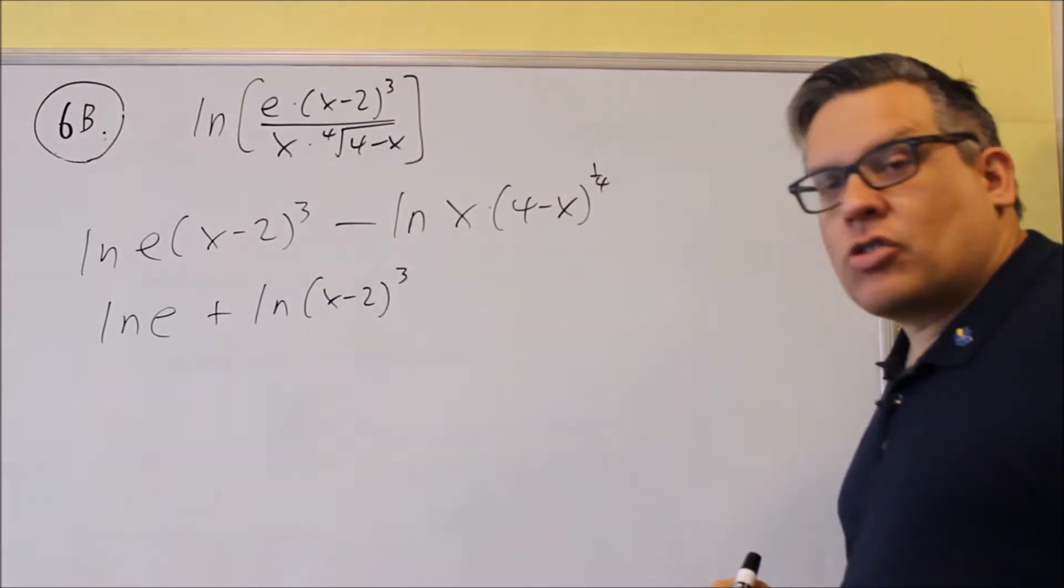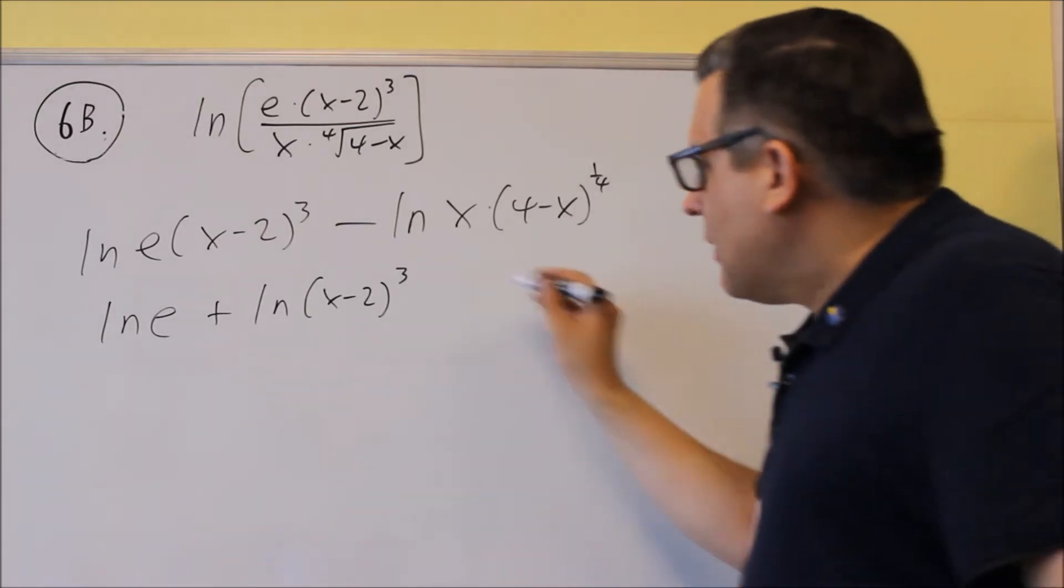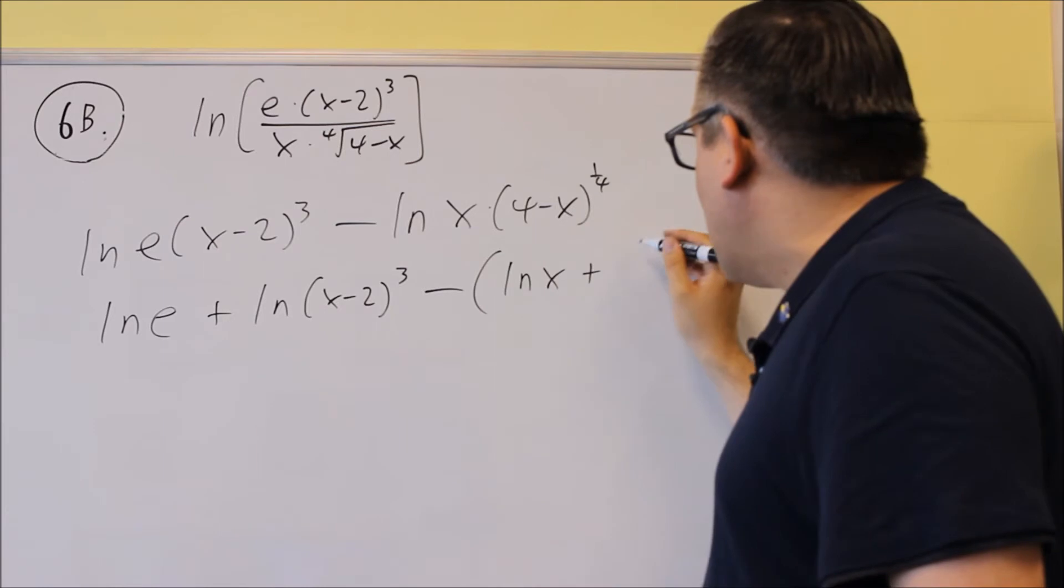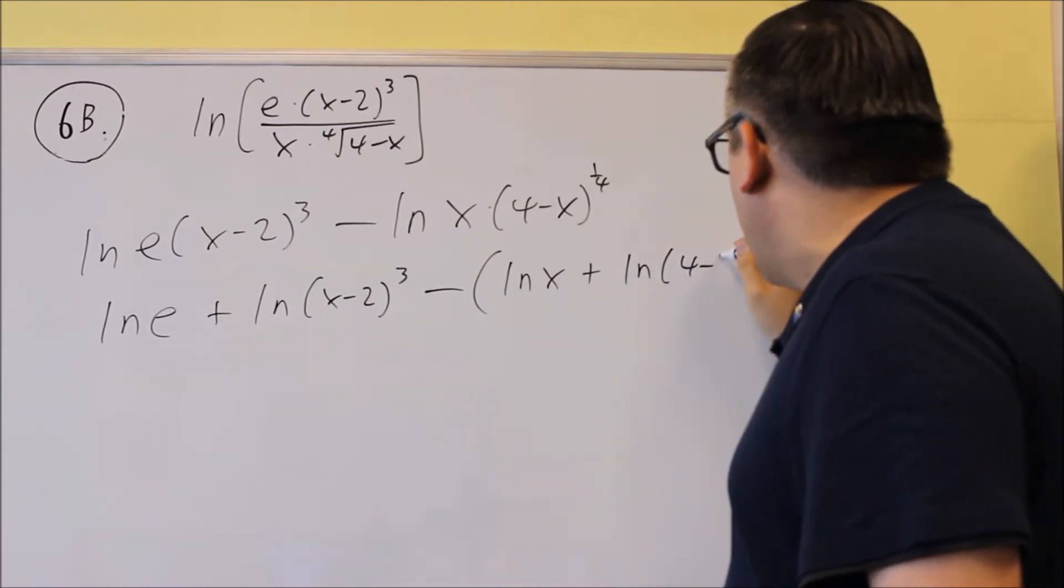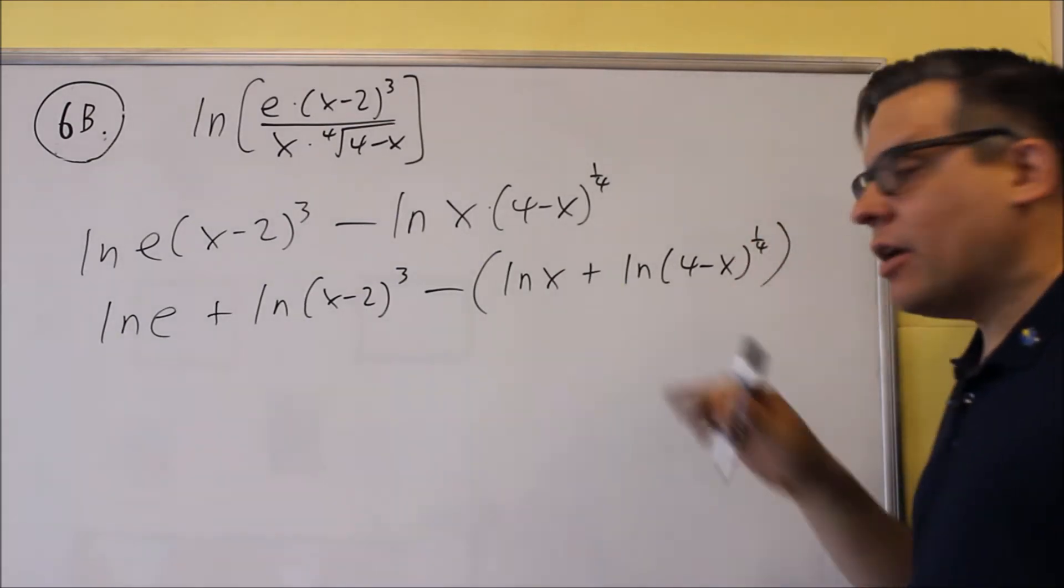So we're now going to do natural log of e, and then natural log of x minus 2 cubed. Next, we've got a minus, and this is going to be natural log of x plus natural log of 4 minus x to the 1 fourth. So we're going to split it up that way, plus sign there.